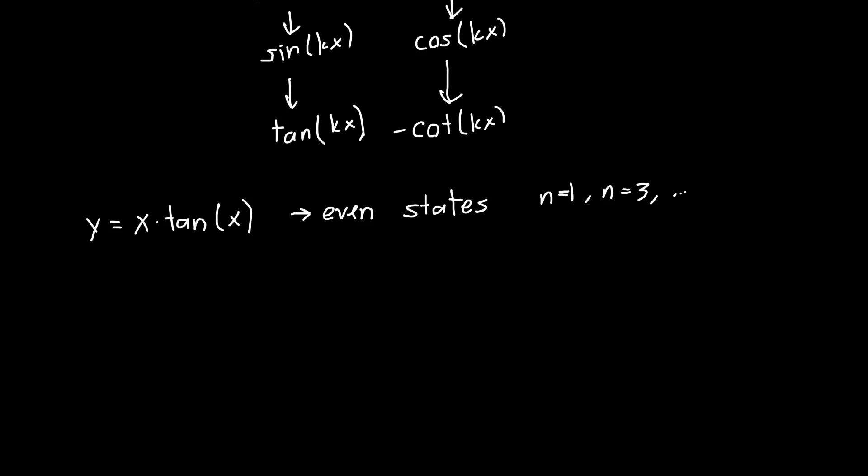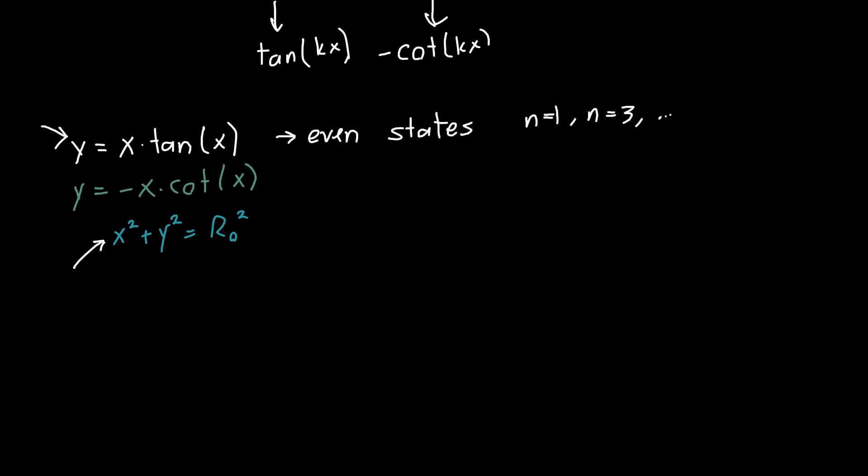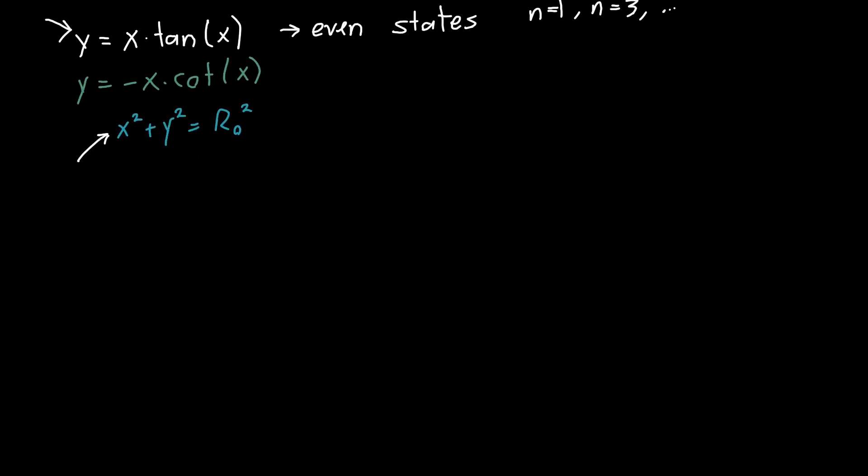And we've also got y equals minus x times cotangent of x and in addition to these two curves we have x squared plus y squared equals r naught squared. So where these two curves intersect this curve we have solutions to the Schrodinger equation, we have available states.